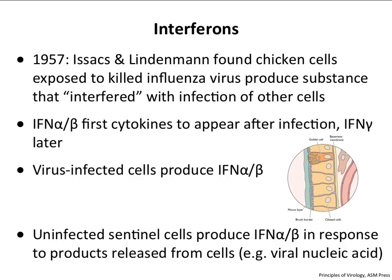All of these sensing pathways — TLRs, RIG-I-like receptors, and cGAS — lead to the production of interferons, which are the proteins that then do the work in the innate system. Interferons were discovered in the 1950s when investigators found that infecting chicken cells with influenza virus and treating new cells with the supernatant protected those cells from infection. They called it interferon because something in the cell culture interfered with virus infection, and later this was shown to be a distinct set of proteins.